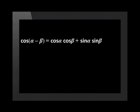These are the compound angle identities. Cos(α - β) is equal to cos α multiplied by cos β plus sin α multiplied by sin β. Cos(α + β) is equal to cos α multiplied by cos β minus sin α multiplied by sin β.